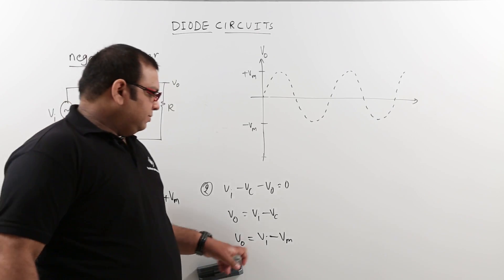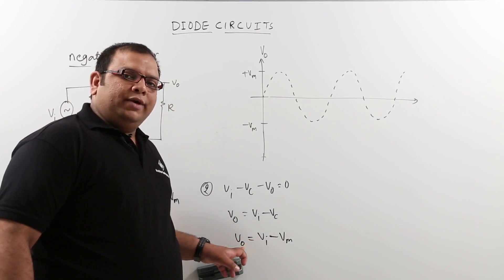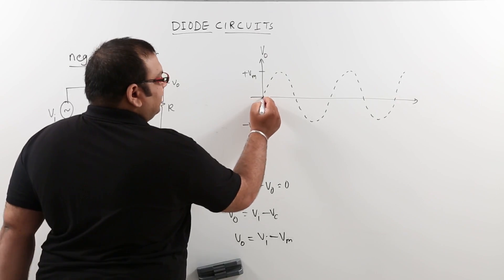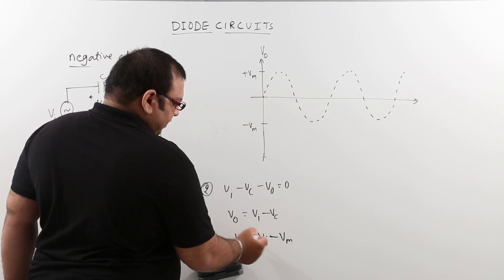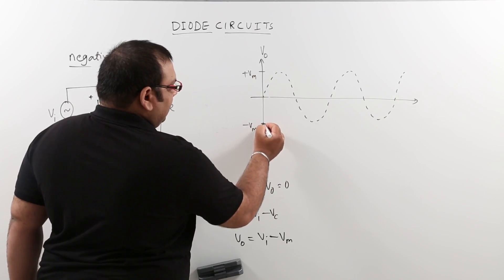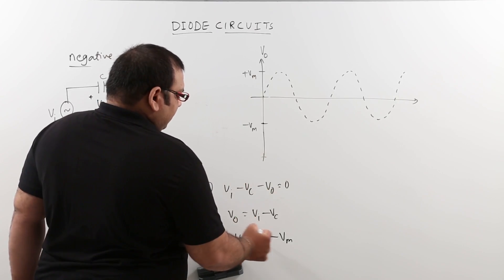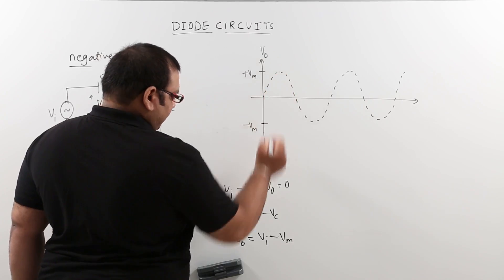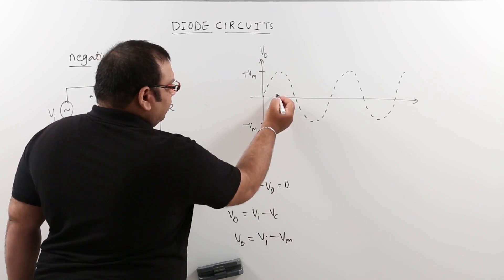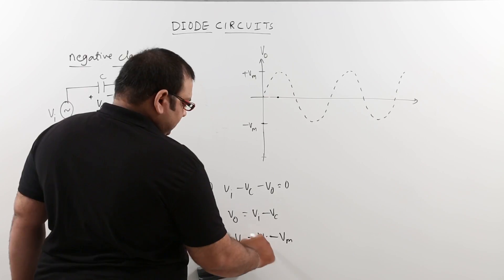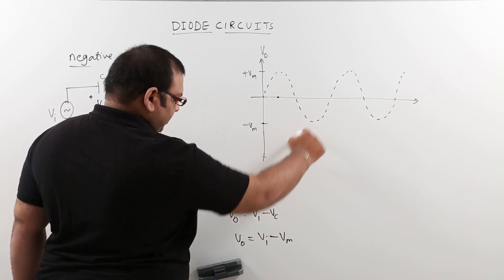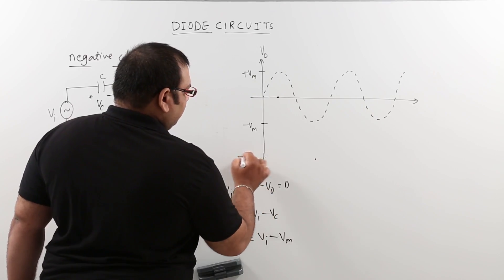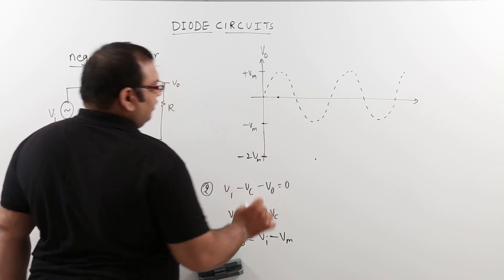From this equation, when Vi is 0, V0 equals minus Vm. When input reaches its maximum peak of plus Vm, V0 equals zero. When input is at negative peak minus Vm, the output becomes minus Vm minus Vm, which equals minus 2Vm.